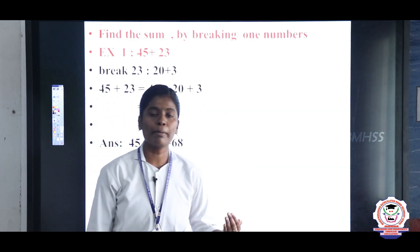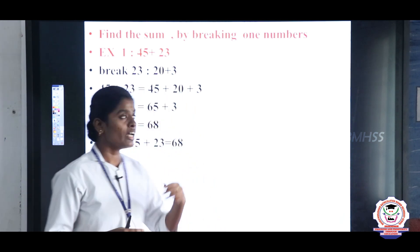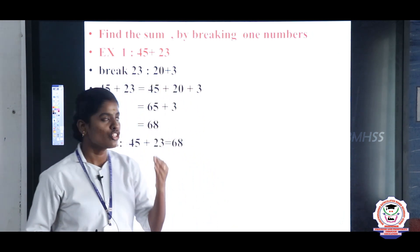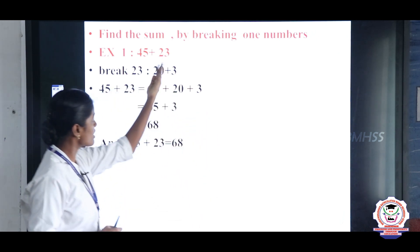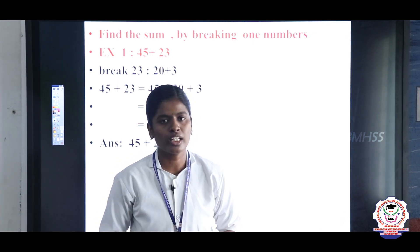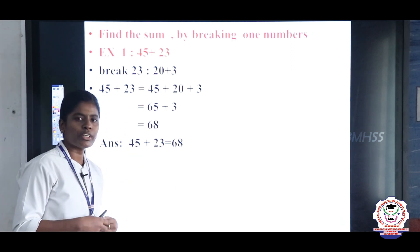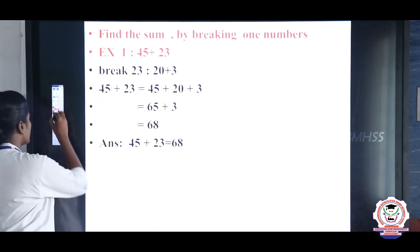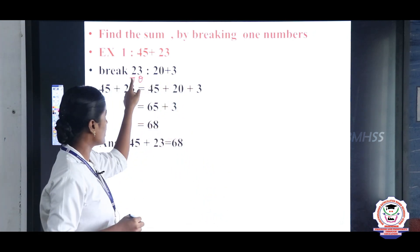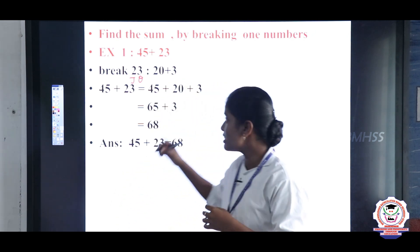Our first topic is: find the sum by breaking one number. If you know addition, they will give two groups of numbers. Here we have 45 plus 23. You will take the right side first number, that is 23, and break it using the expanded form. The ones place value is 3 and the tens place value is 2, so 23 equals 20 plus 3.